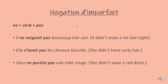To form the negation of imparfait, it's very simple — the same as we do for present tense negation, which is just put ne and pas before and after the verb. For example, to say it didn't snow a lot last night: Il ne neigeait pas beaucoup hier soir. Another example: Elle n'avait pas les cheveux bouclés — she didn't have curly hair. Note that since avoir starts with a vowel, we use n' with an apostrophe instead of ne. Vous ne portiez pas une robe rouge — you didn't wear a red dress. So ne and pas before and after the verb.